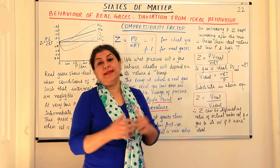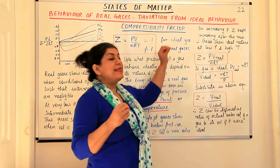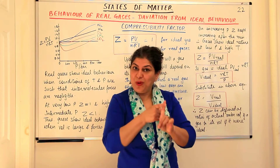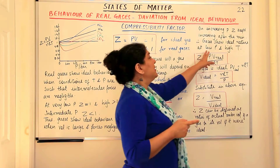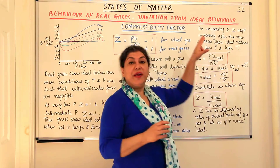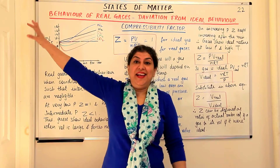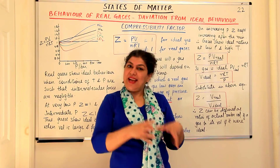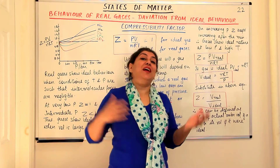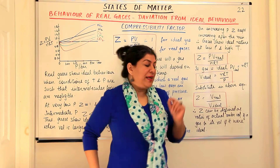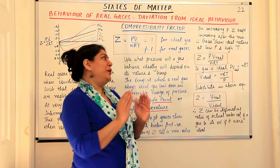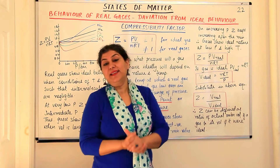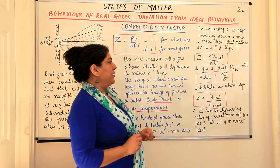All gases can show ideal behavior. If we keep in mind the Boyle point and the pressure, at very low pressure and high temperature the intermolecular forces would be negligible, and that is when gases behave ideally. There is a derivation which expresses the compressibility factor in terms of the volumes of real and ideal gases.